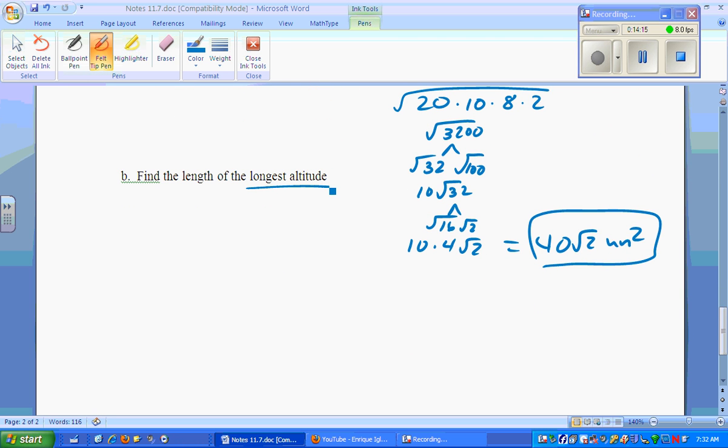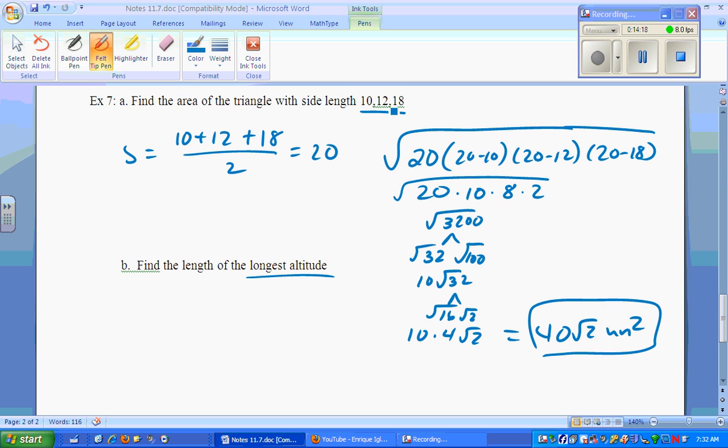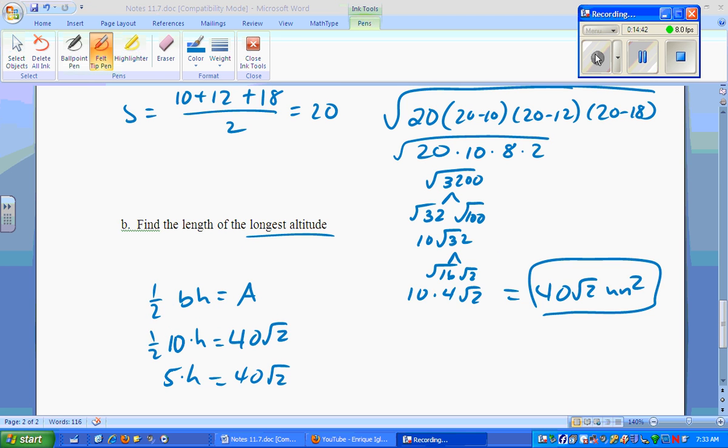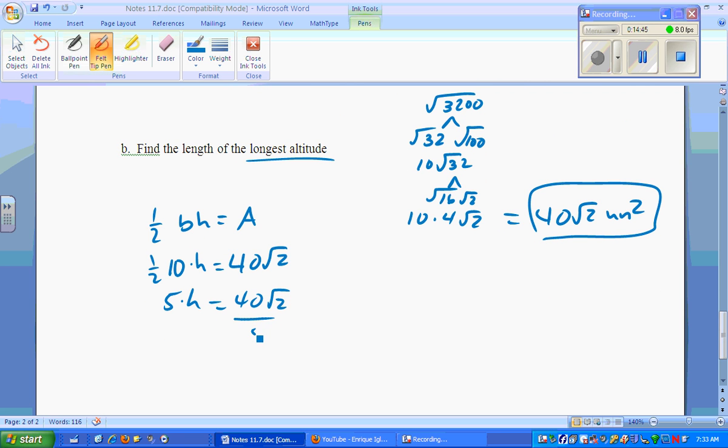And then if we want to find the altitude to the longest side, well, the longest side is 18. So we know that 1 half base times height is the area formula. We know the area is 40 root 2. We know half. We want the base to be 18 and the h to be height. Figure it out. This is 9h equals 40. Oh, we want it to the longest altitude. Sorry, the longest altitude is the shortest side. So then we get 5, divide by 5 for it, and then h equals 8 root 2. Hopefully that makes sense to you. We will do more of this. Star this one because this will also be on the test. Good luck to you and good night.